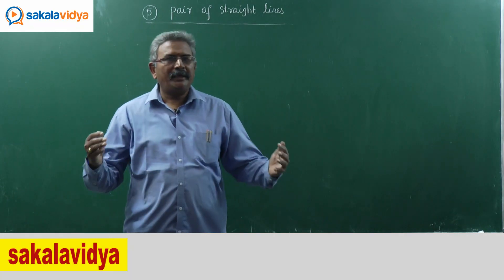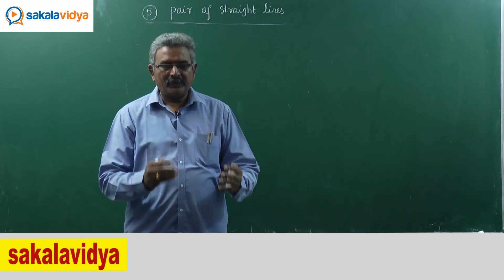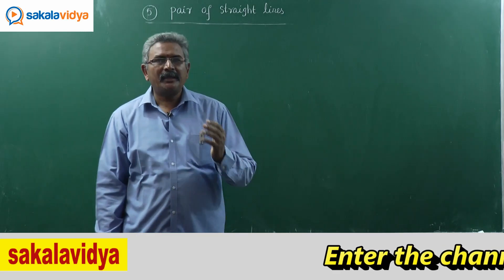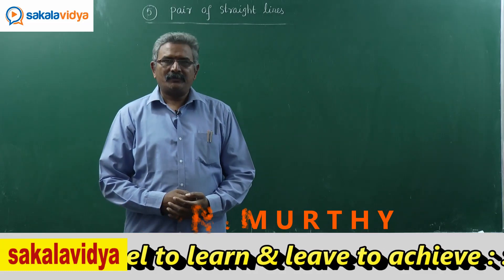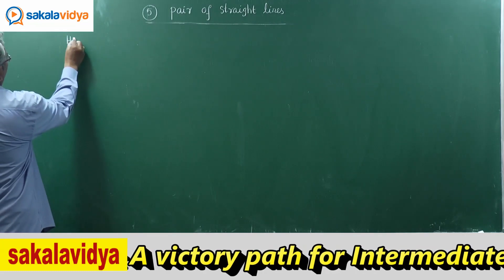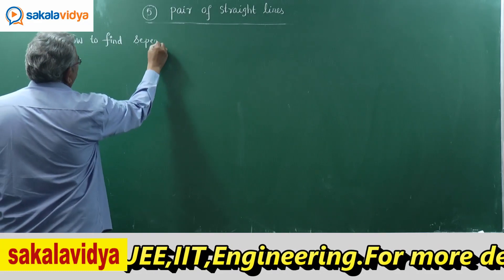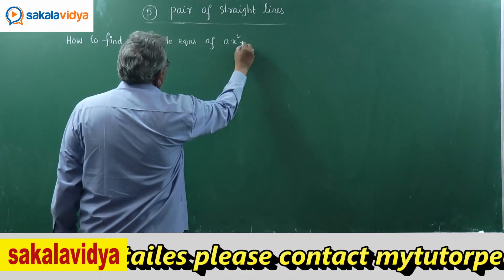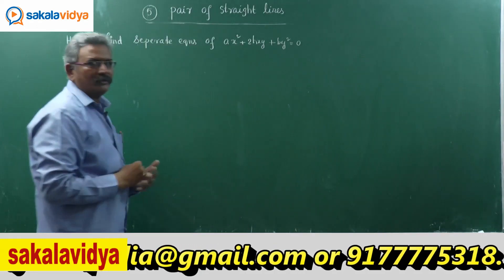Let us find out the separate or individual equations of a pair of straight lines ax² + 2hxy + by² = 0. That means how to find out the individual equations or separate equations of a pair of straight lines which is in the form of ax² + 2hxy + by² = 0. Let us have a discussion now. This is our task.